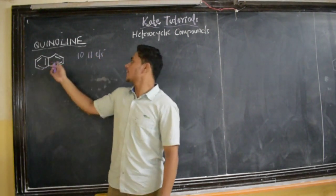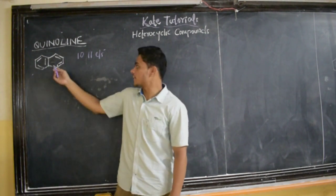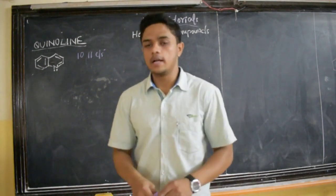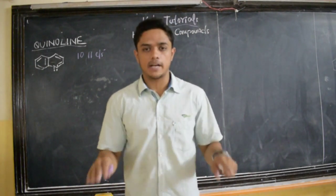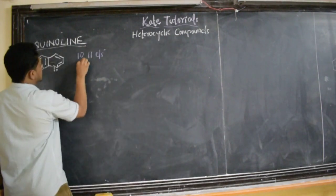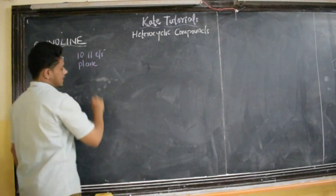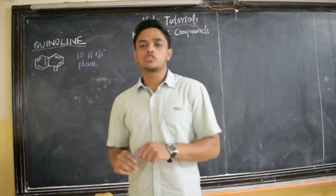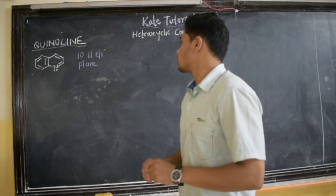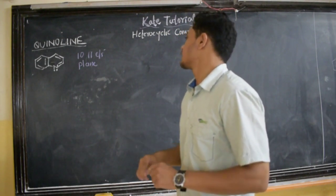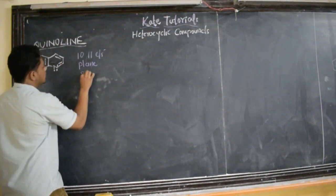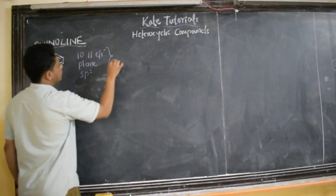All carbon atoms are sp2-hybridized, and this nitrogen is also sp2-hybridized. So they will be in a trigonal planar structure. Because they are in trigonal planar structure, they will be in a single plane. They have 10 pi electrons according to Hückel's rule, and they have satisfied aromaticity. All are in a single plane and all are sp2-hybridized, so the compound is aromatic.